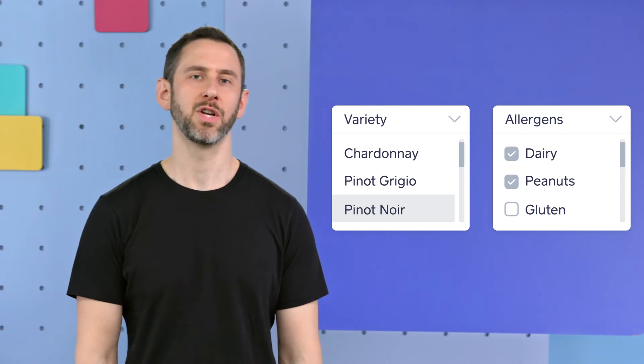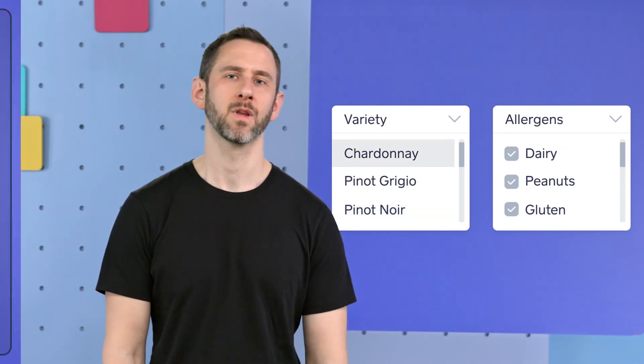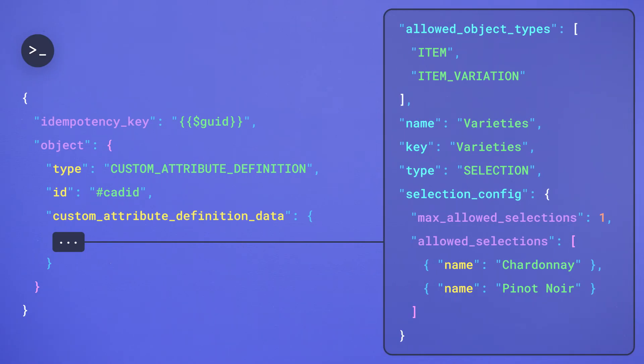With selections you choose either a multi or single selection type. For example, a single selection for a wine might be a variety with options like Chardonnay or Pinot Noir because a bottle of wine would only be one of those, not both.